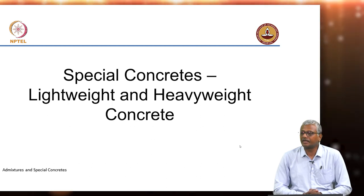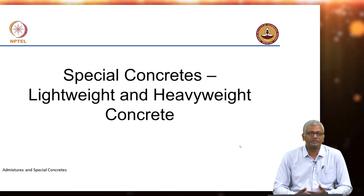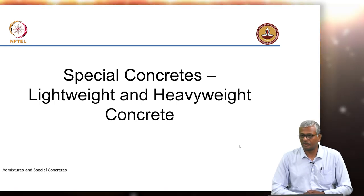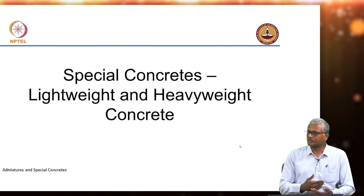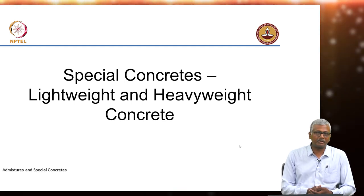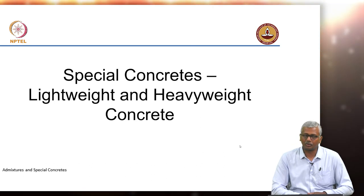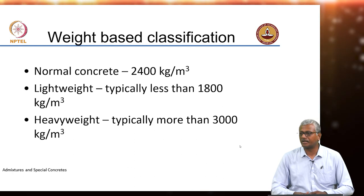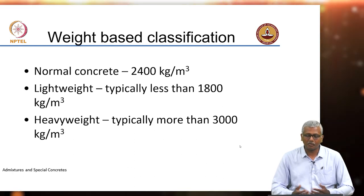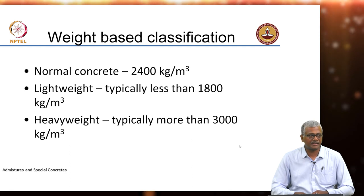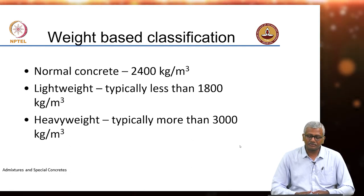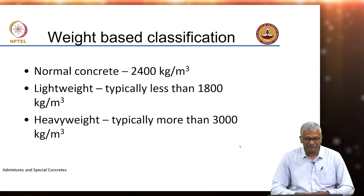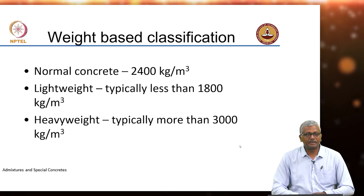In several applications we demand concrete to have weights that are not normal — that is not 2400 — because we need specific properties like insulation with lightweight concrete or radiation shielding with heavyweight concrete. So in such applications we have to deal with densities that are not exactly at 2400. Normal concrete we typically say has a density of 2400, lightweight is typically less than 1800 kilograms per cubic meter, and heavyweight is generally more than 3000 kilograms per cubic meter.